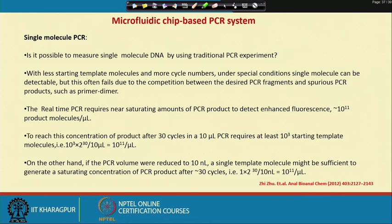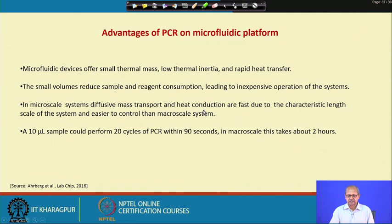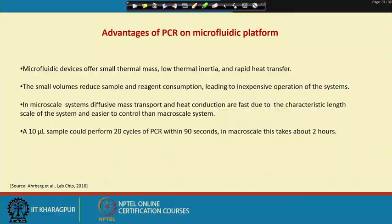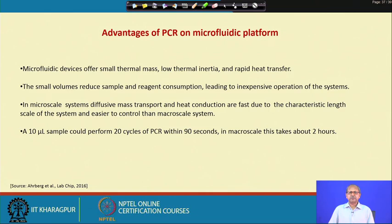What are the advantages of microfluidic PCR? Microfluidic devices offer small thermal mass, low thermal energy, and rapid heat transfer. Small volumes reduce sample and reagent consumption, leading to inexpensive operation. At the microscale, diffusive mass transport and heat conduction are fast due to the short characteristic length scale. A 10-microlitre sample can perform 20 cycles of PCR within 90 seconds, whereas normally it takes around 2 hours — the time can be reduced to as little as 60 seconds.